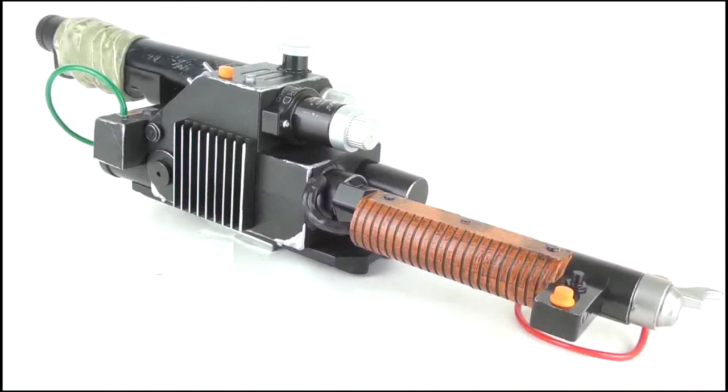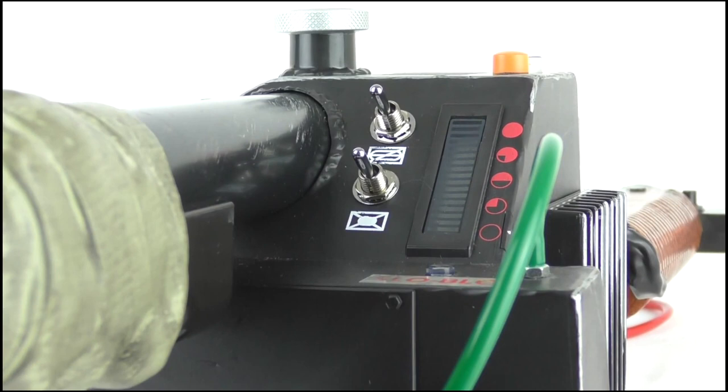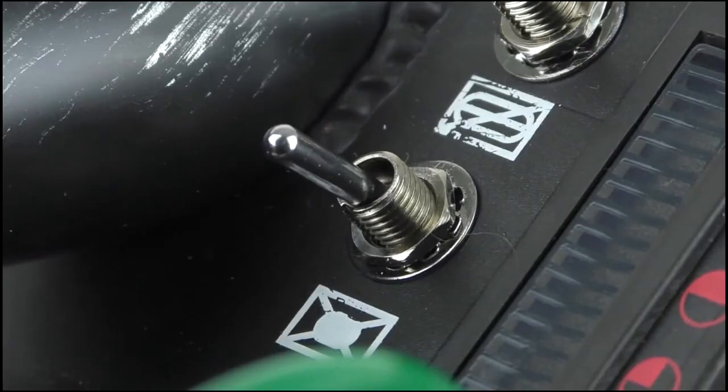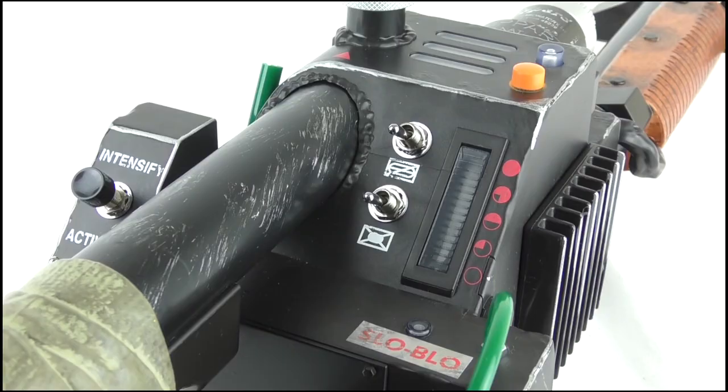Turning to the all-important part, the features. I love how the activation sequence from the movies has been ported across to the wand, and pressing the thrower button on its own does nothing. Instead, the lower main power switch must be turned on first, which will activate the red LED on the bottom and trigger a power-up noise.